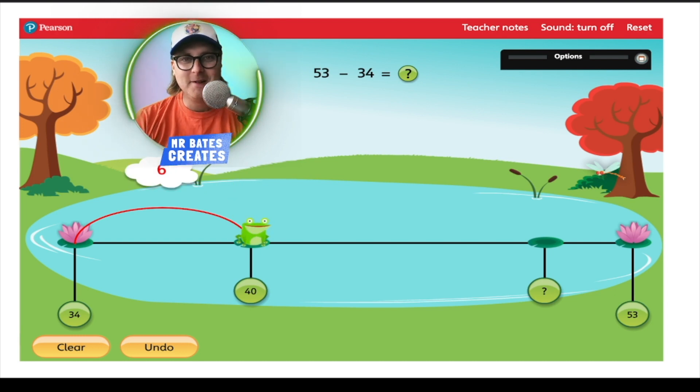There we go. Now, we've got to 40. We now need to jump to the nearest 10 to our number. Our number is 53, so our nearest 10 is going to be 50, of course. So, how many jumps between 40 and 50? Well, that's one big jump of 10. Here we go.